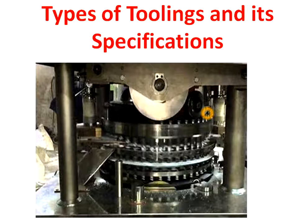For heavy tablets we are using heavy tools, and for smaller size tablets we are using lighter tools. You have to see the size of the top punch, lower punch, and die. The size of the top punch, lower punch, and die are different for different sizes of tablets. For bigger size tablets we use heavy tools, and for smaller size tablets we use lighter tools.